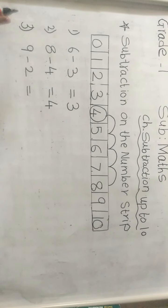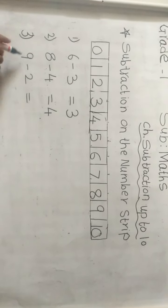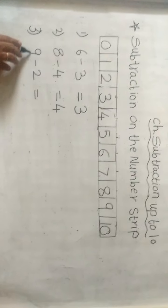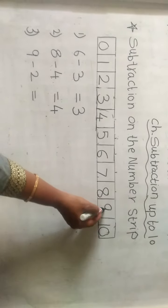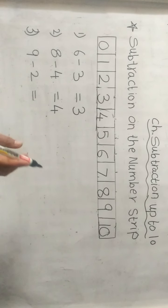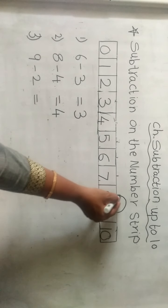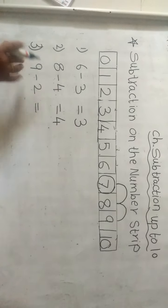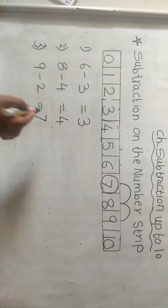Understand? Next example. Here is number 9 minus 2. Now go to number 9 on the number strip. Here is number 9. And minus 2 means we have to go 2 steps backward. Let's start: 1 and 2. We are here near number 7. So 9 minus 2 is equal to 7.